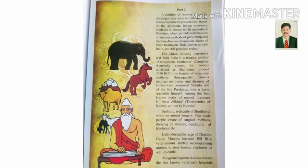The oldest existing veterinary text from India is a treatise entitled Ashwa Ayurveda Siddhanta — a complete Ayurvedic system for horses. Attributed to Shalihotra — 'attributed' means regarded to be the cause of — around 2350 BCE, he is considered the founder of veterinary medicine.